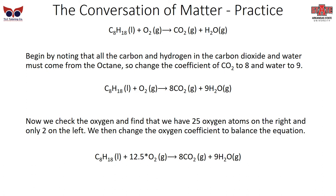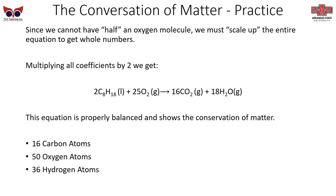But there's one more step: we can't have half an oxygen molecule — we have to use entire molecules. So we scale up the entire equation by multiplying all coefficients by 2, giving us 2 octanes, 25 oxygens, 16 carbon dioxides, and 18 waters. The equation is properly balanced because both sides have 16 carbon atoms, 50 oxygen atoms, and 36 hydrogen atoms.